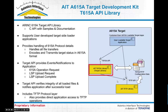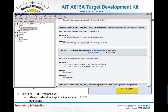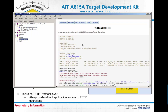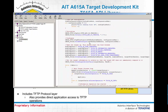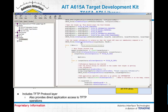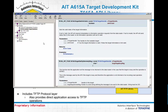The key part of our target software development kit is our API library that handles the target operations. It provides a public API that a user-created application can use. It's a C API and it's provided with complete documentation for all the functions in the API, along with documented samples that show how to use the API with links to all the detailed documentation for each of the C functions.